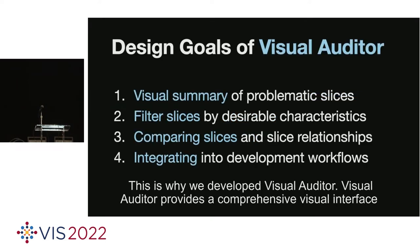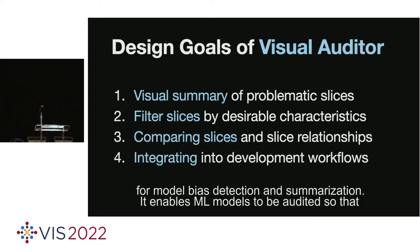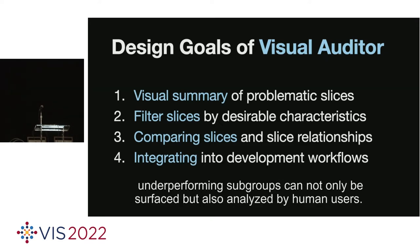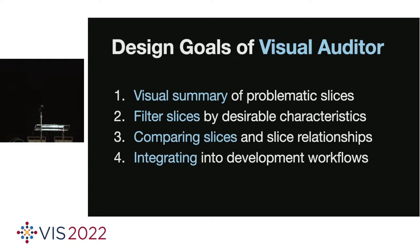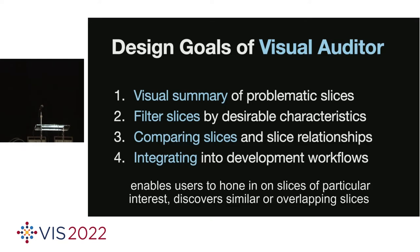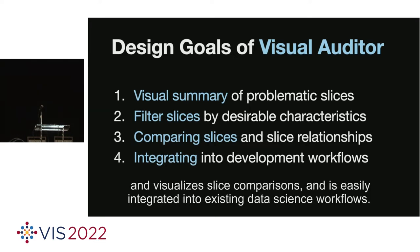This is why we developed Visual Auditor. Visual Auditor provides a comprehensive visual interface for model bias detection and summarization. It enables ML models to be audited so that underperforming subgroups can not only be surfaced but also analyzed by human users. We aimed to create a visual overview that effectively summarizes problematic data slices, enables users to hone in on slices of particular interest, discovers similar or overlapping slices, visualizes slice comparisons, and is easily integrated into existing data science workflows.